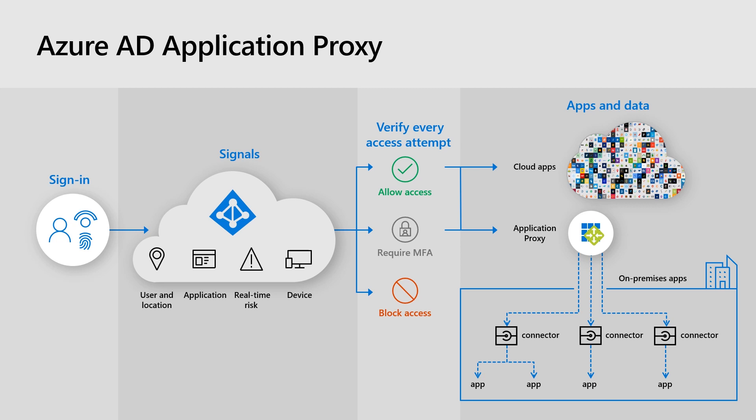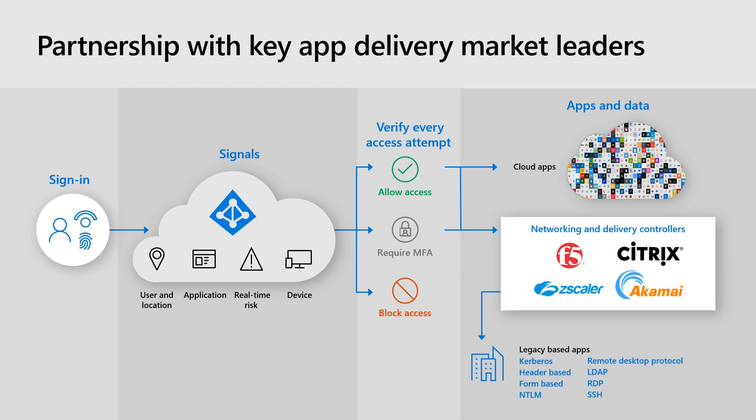By doing that, you can still protect these applications with conditional access, identity protection, and you can check signing logs and basically have all the benefits of having applications in Azure AD. In addition to the Azure AD Application Proxy, we have partnered with key application delivery controllers and networks like F5, Zscaler, Citrix, and Akamai. The idea of these partnerships is that we have integrations together where they can control the traffic to the application while giving the authentication traffic to Azure AD, effectively protecting these applications with conditional access, identity protection, and more.